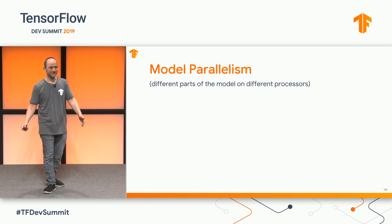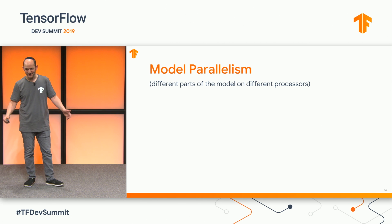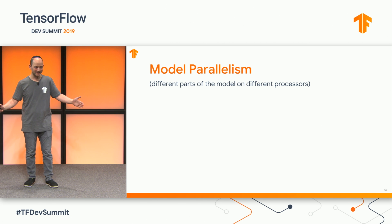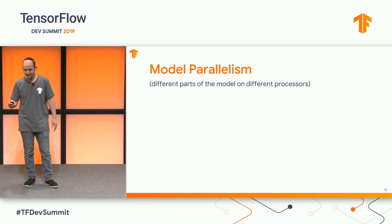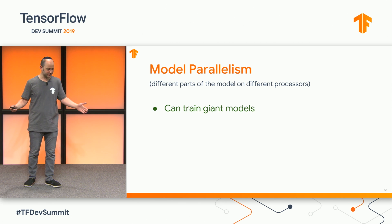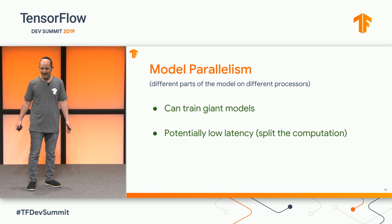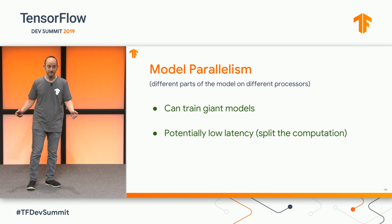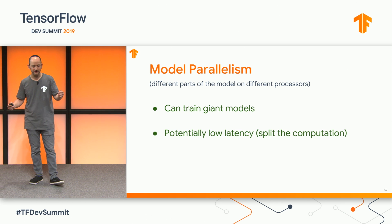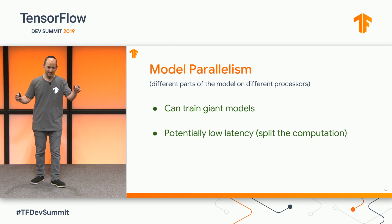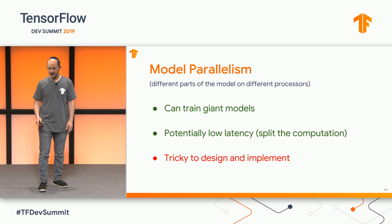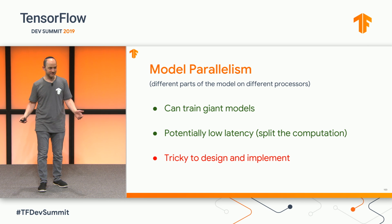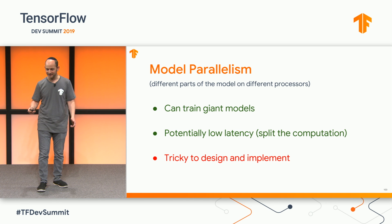So if all the parameters will not fit on one core, we need to do something called model parallelism, which means splitting the model itself between different devices. That should let us train really large models, and it should also be very good for inference latency because now the computation for one example can be split across multiple devices. The problem is it's very tricky to design these kinds of algorithms.